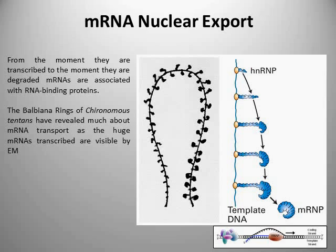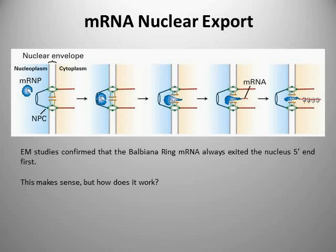What was interesting about this experiment was that you can follow these large mRNA structures by electron microscopy and observe them as they exit the nucleus. The scientists found that these Balbiani ring mRNA molecules always exited the nuclear pore in the same direction — always in a 5' to 3' manner, meaning the 5' end of the mRNA always came out first.